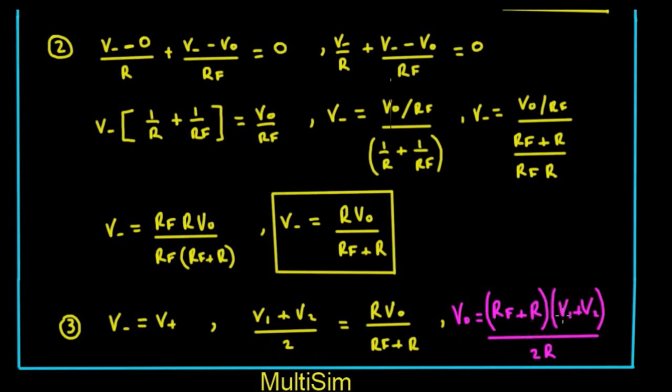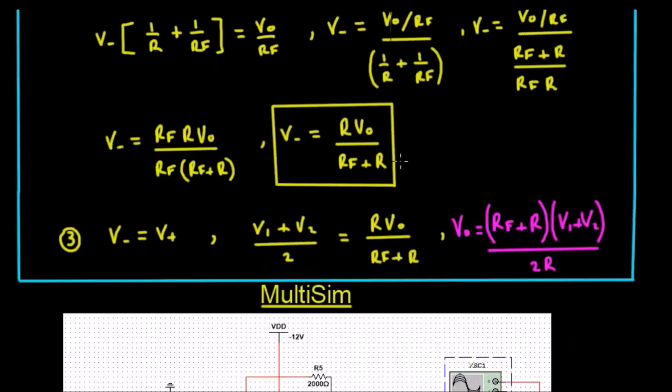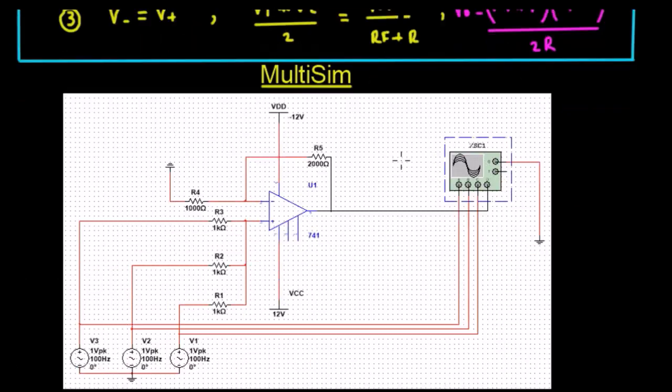You can see that the output is equal to the sum of the two input voltages, and we can choose the values of rf and r in order to give us some gain.